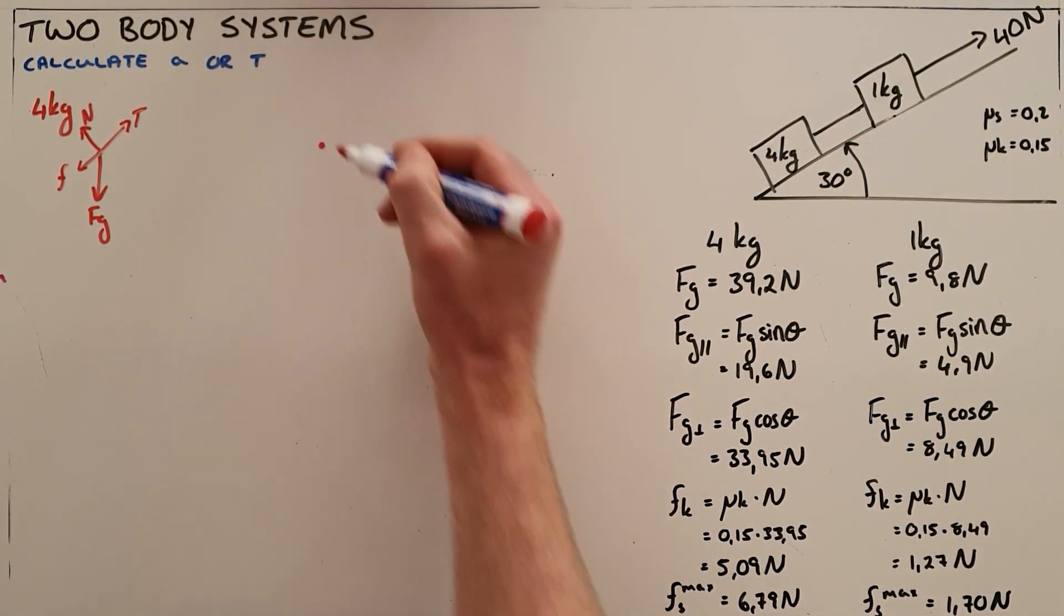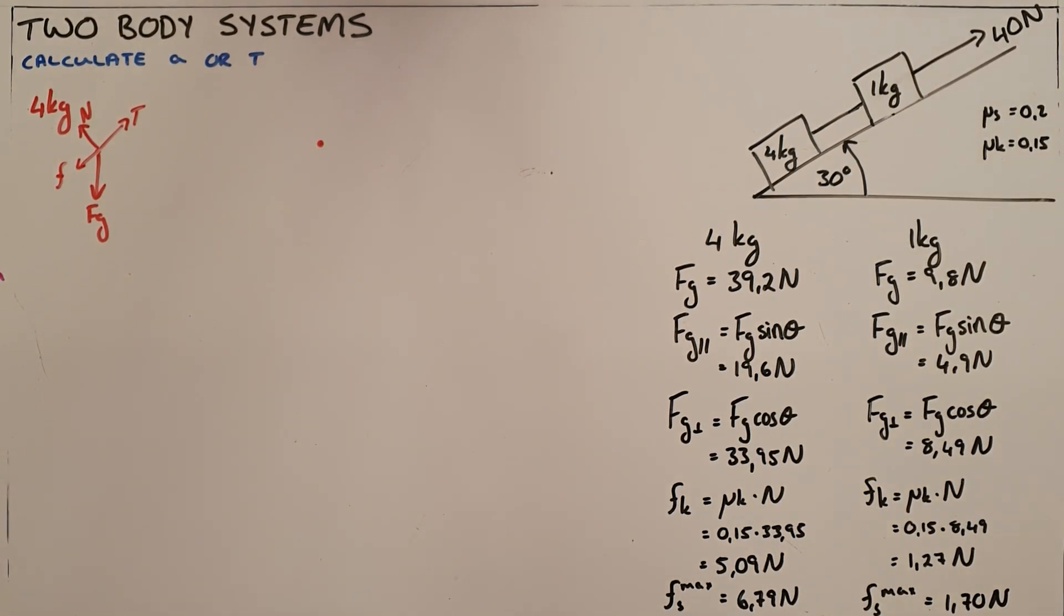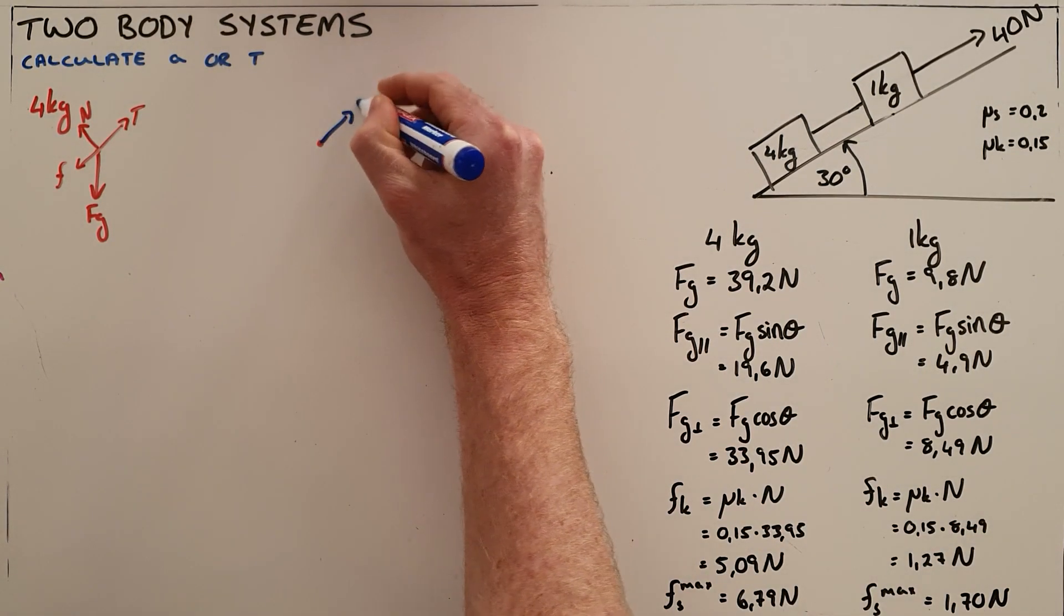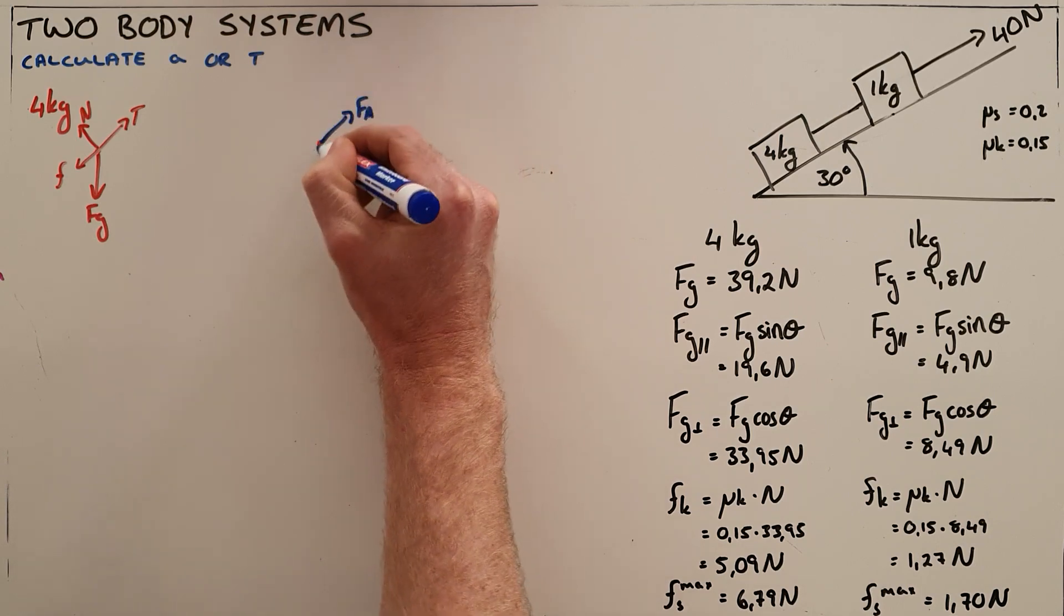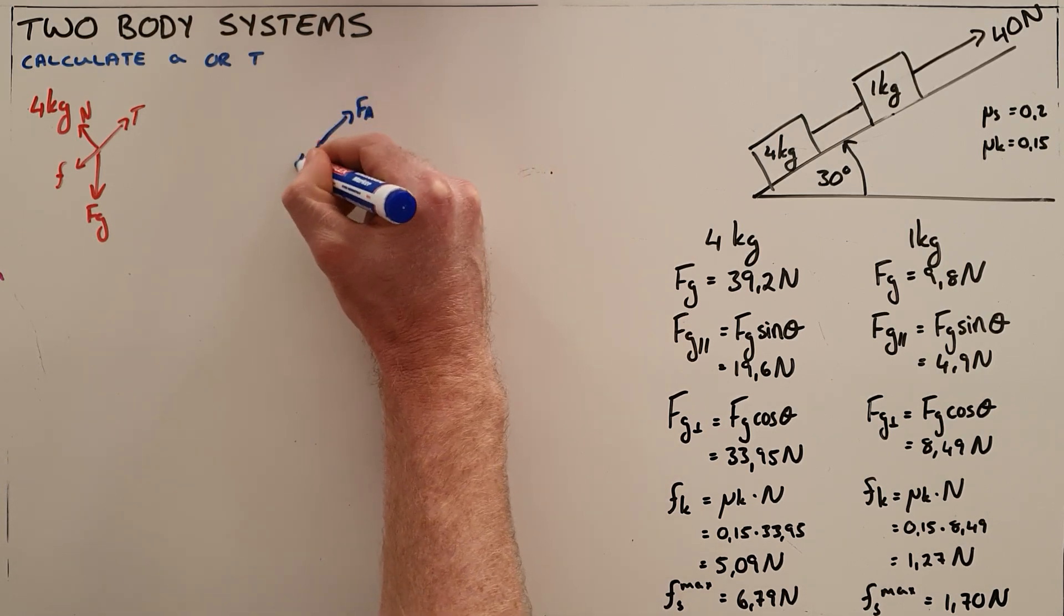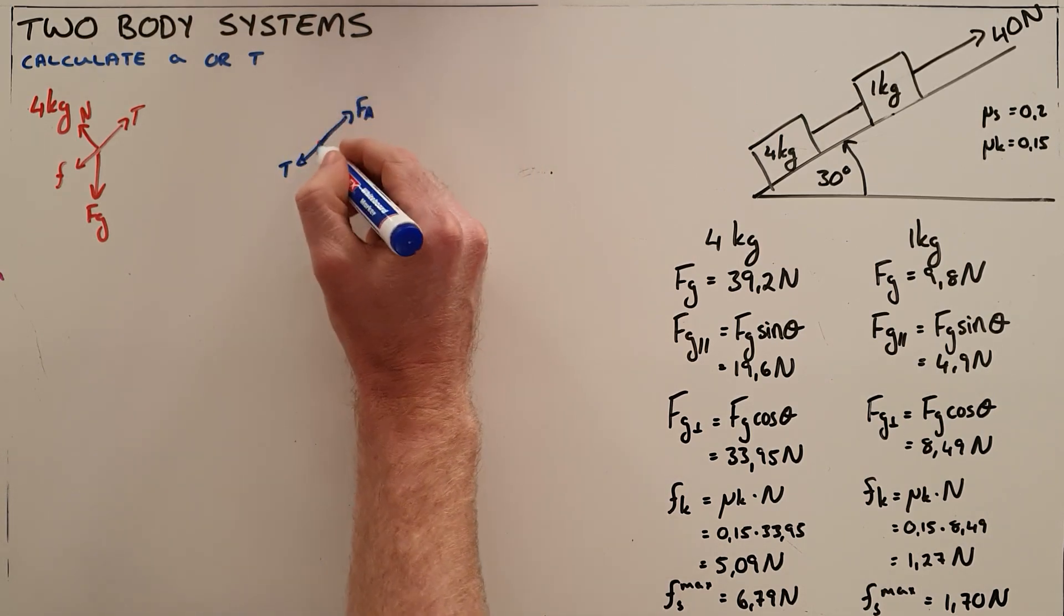For our 1 kilogram object we do the same thing where now we know that there is an applied force pulling the object up the slope, there is now a tension force that is pulling the object down the slope.